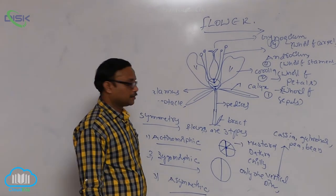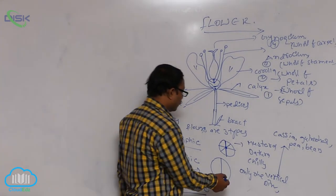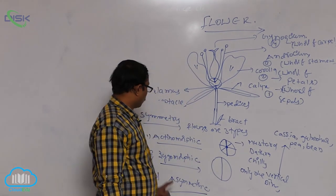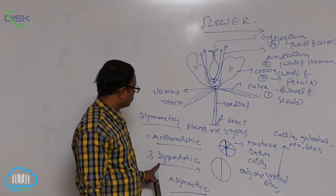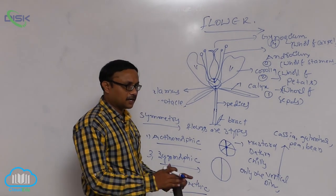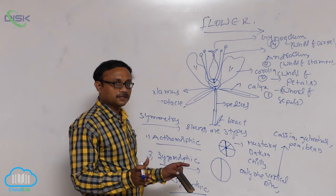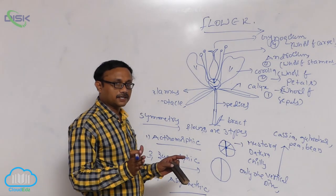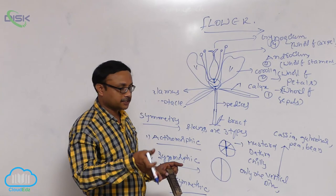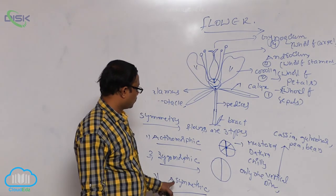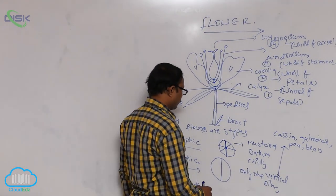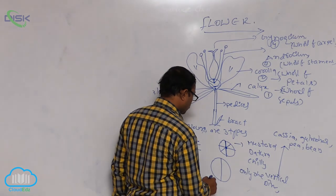An asymmetric flower cannot be divided into equal parts by any vertical direction passing through the center. So the flower cannot be cut into equal parts by any direction through the center; that is known as an asymmetric flower. An example of an asymmetric flower is Canna.